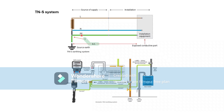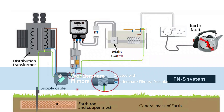The neutral and earth are both separate throughout the system — they are known as TN-S: Terra Neutral Separate. Earth and neutral are separate, and the armor is used as earth.